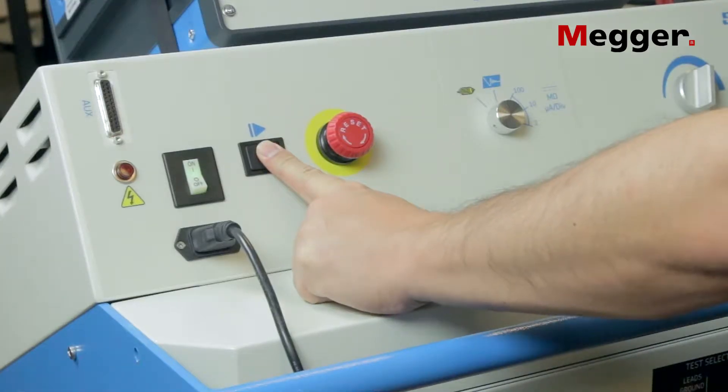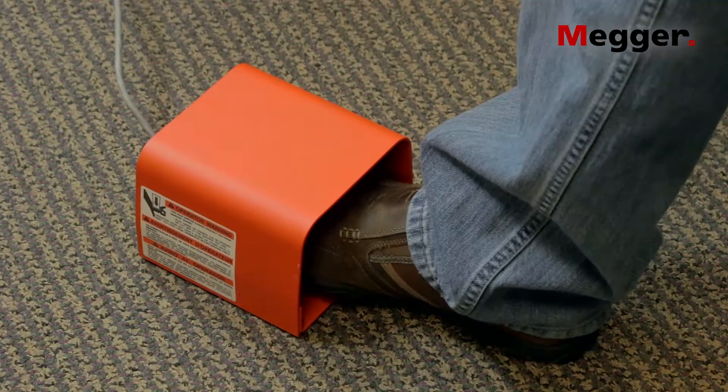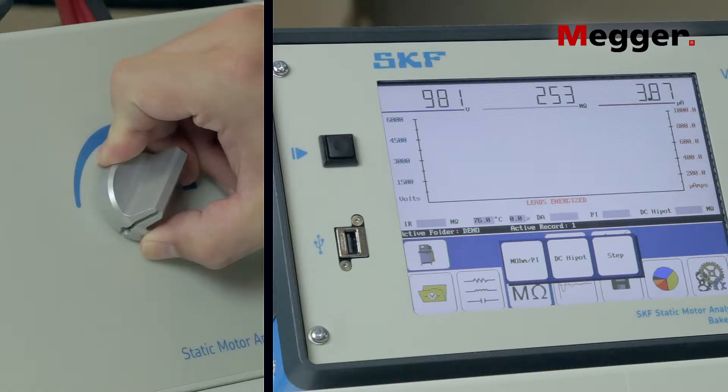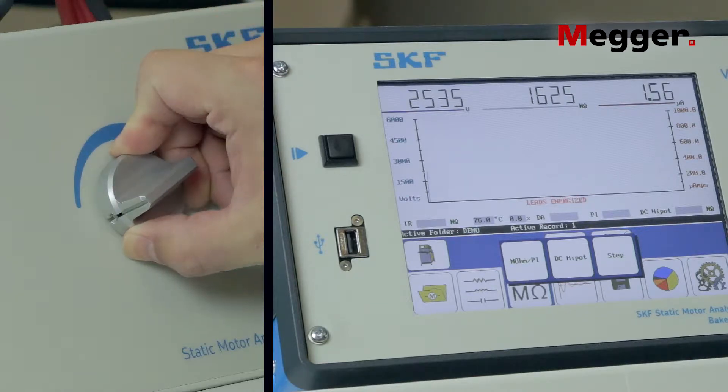Press and hold the push to test button or press and hold the foot switch if you have one. Smoothly turn the voltage control knob to raise the voltage to your first step. In this case, it's 10,000 volts.